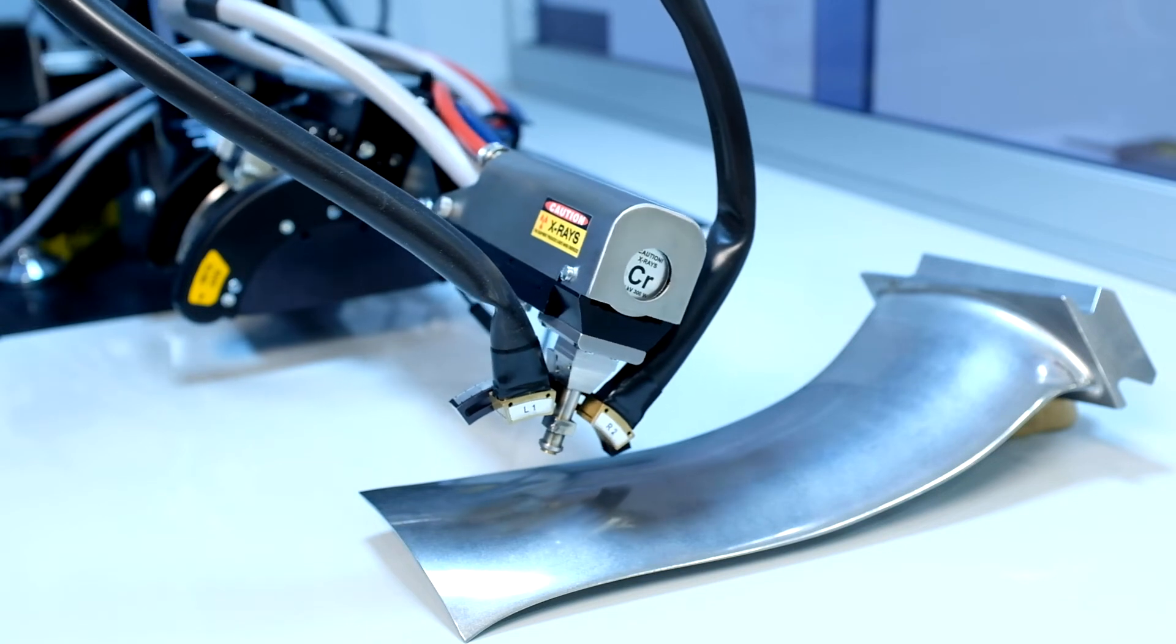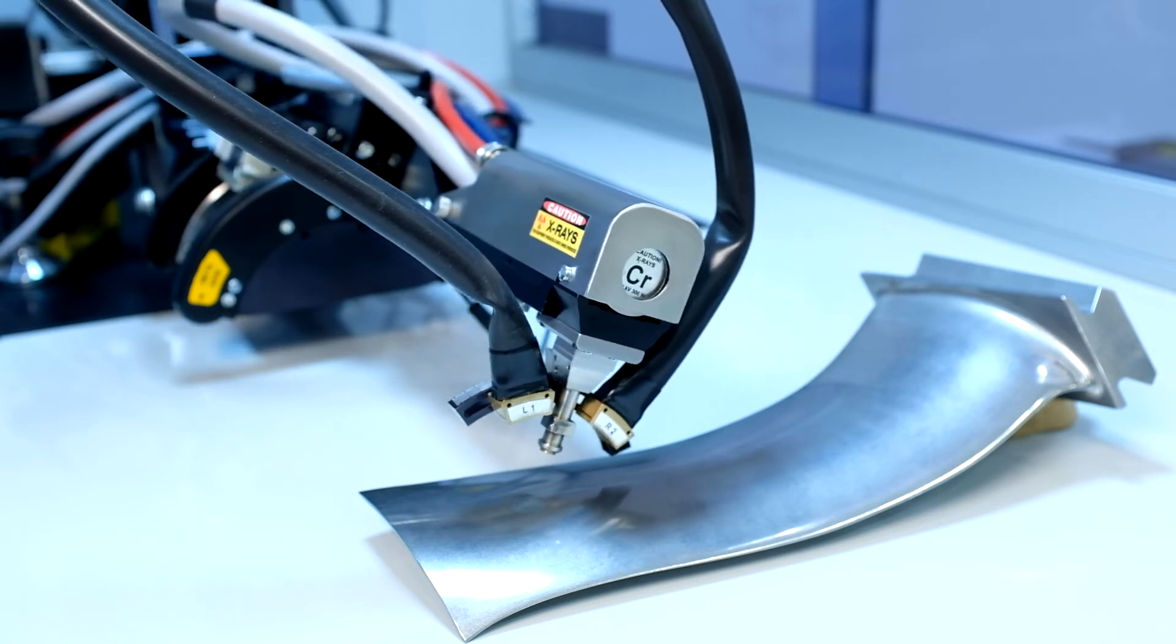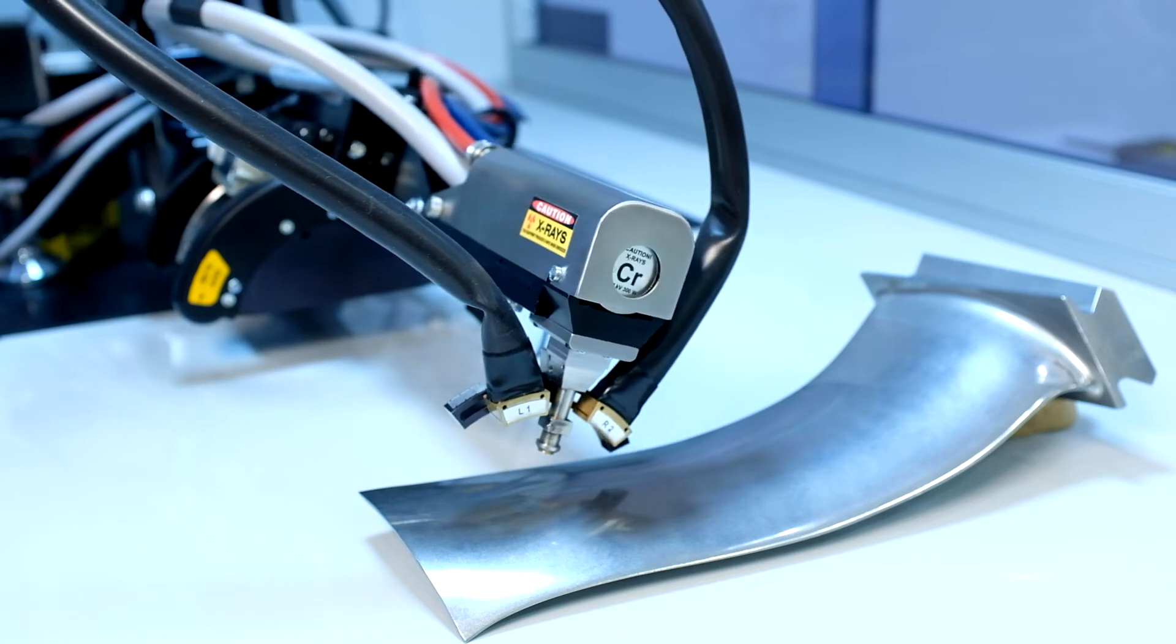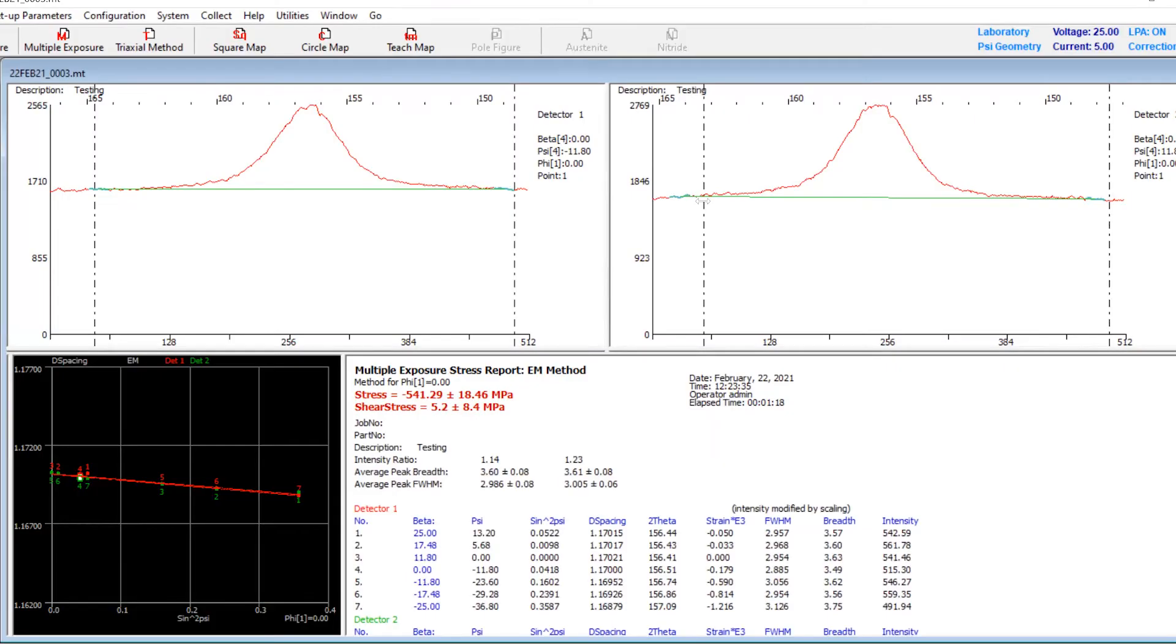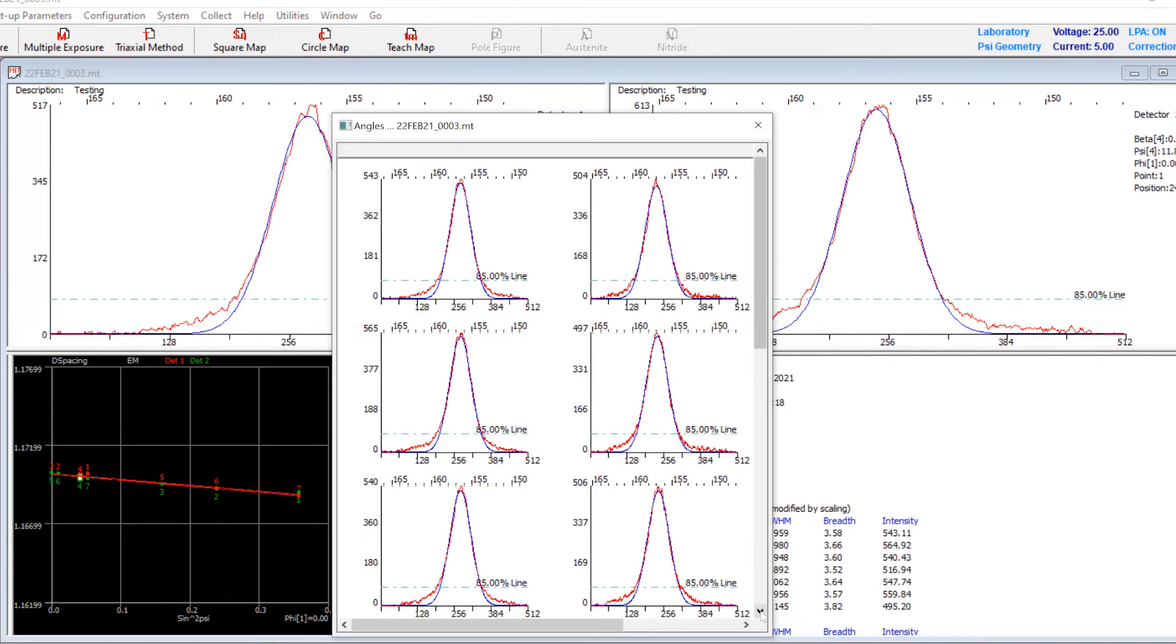The data collected is a measurement of the d-spacing, or the distance between crystallographic planes over a set of tilts. The software displays the diffraction peak collected at each tilt and determines the Bragg angle of the peak.